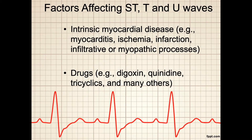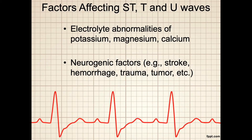Factors affecting the ST segment, the T wave, and the U waves include intrinsic myocardial disease such as myocarditis, ischemia, infarction, infiltrative or myopathic processes, or medications such as digoxin, quinidine, tricyclic antidepressants, and many other classifications of medications. Other factors include electrolyte abnormalities of potassium, magnesium, or calcium levels, and neurogenic factors such as a stroke, a hemorrhage, brain trauma, or a brain tumor.